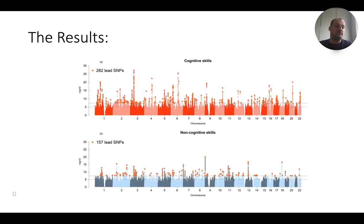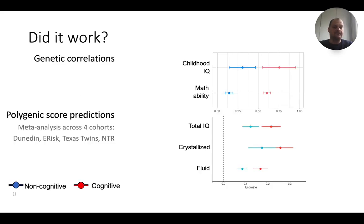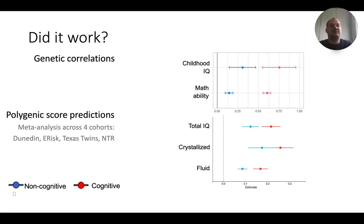We get two Manhattan plots: one for cognitive skills, which is almost identical to the cognitive performance GWAS, and one for non-cognitive skills, which is the variation in educational attainment not attributable to cognitive performance. We checked whether it worked by using external traits such as childhood IQ and math ability — separate GWAS data not used in the model — and showed that cognitive skills correlate highly with math ability and childhood IQ, whereas non-cognitive skills do not.